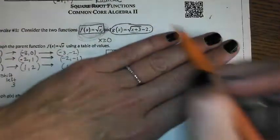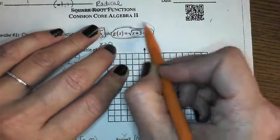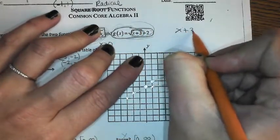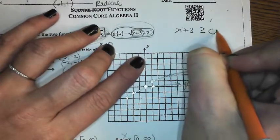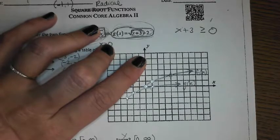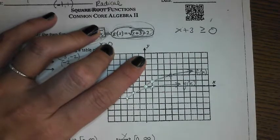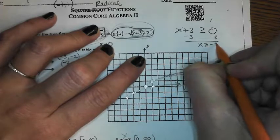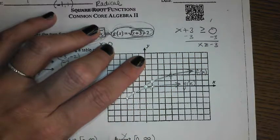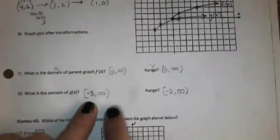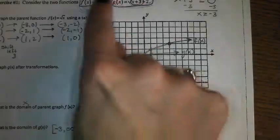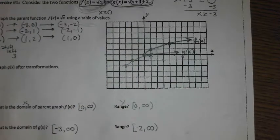One other thing — let's pretend we only have this function. For your domain, whatever's underneath the radical — in this case x plus 3 — always has to be greater than or equal to 0, because you can't take the square root of a negative. So whatever's underneath the radical has to be positive, or at the very least 0. When you solve that by subtracting 3 from both sides, you get x has to be greater than or equal to negative 3, which in interval notation is from negative 3 to infinity. Whether they give it to you visually, through a function, or through transformations, there are different ways to determine the domain and range.